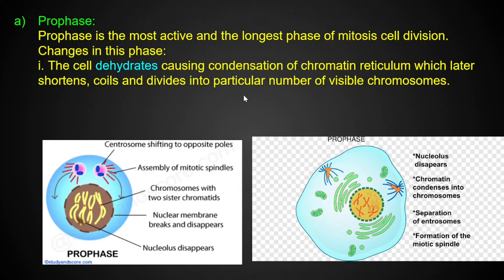The cell dehydrates, causing condensation of chromatin reticulum, which later coils and divides into a particular number of visible chromosomes. Spindle fibers, called mitotic spindle fibers, begin to form. Chromosomes with two chromatids are made of thread-like structures.